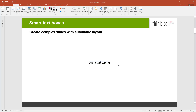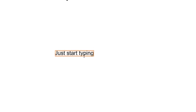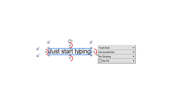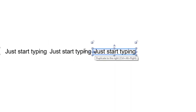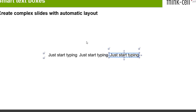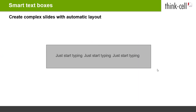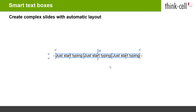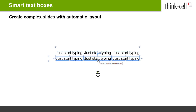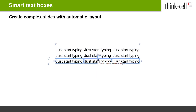If you want to add another text box, you can again use the buttons in the ThinkCell ribbon or one of the four plus buttons surrounding an existing text box. You can use this for single text boxes as well as for groups of text boxes. Therefore, you can quickly build a table layout.